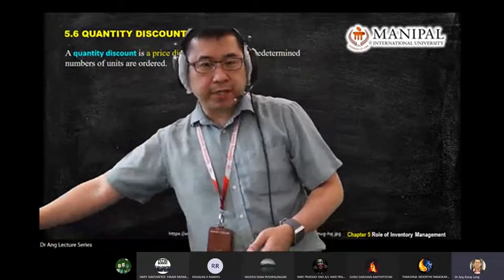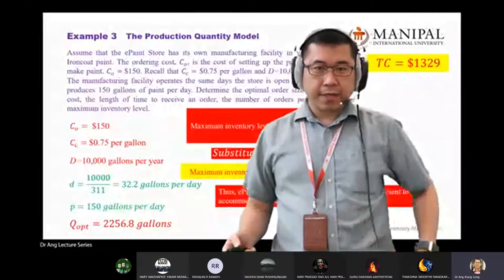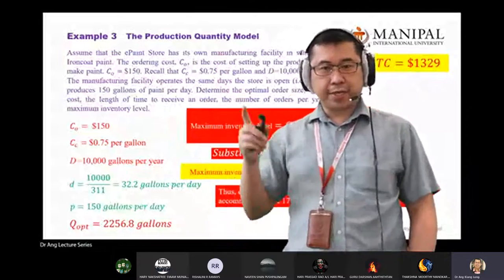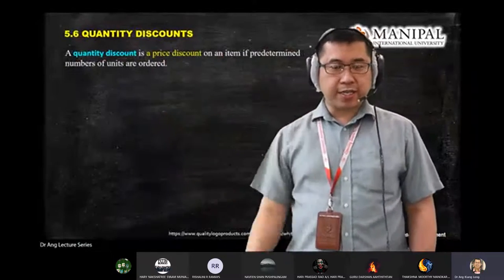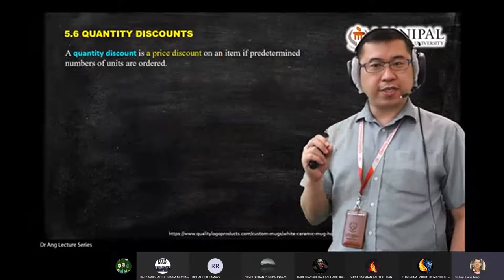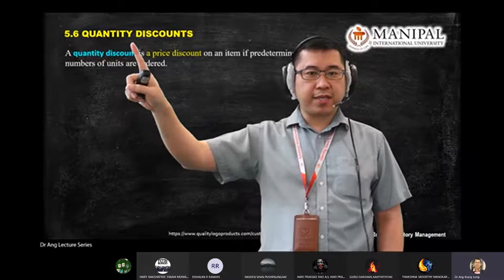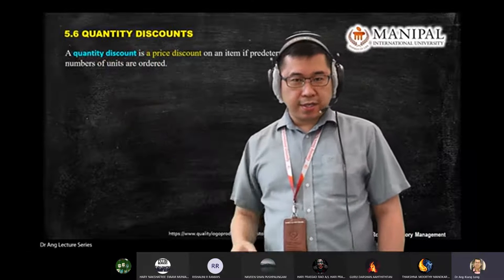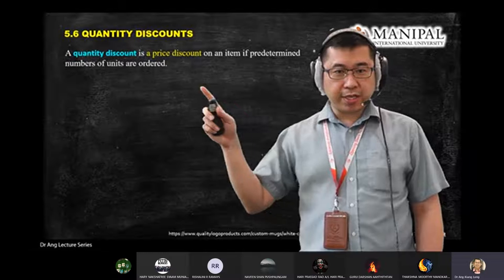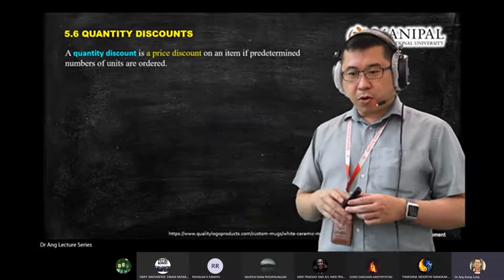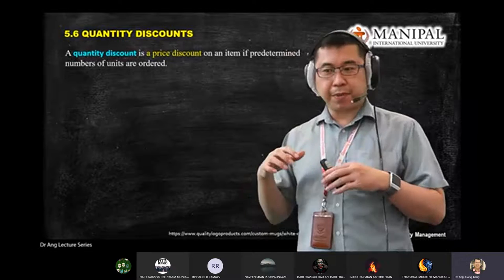Now we have completed the production quantity model and basic model. Now we look at quantity discount. There's one type of order that falls under this category: quantity discount order. What does quantity discount mean? It means that the more you purchase, the more privilege of discount that people can give you.